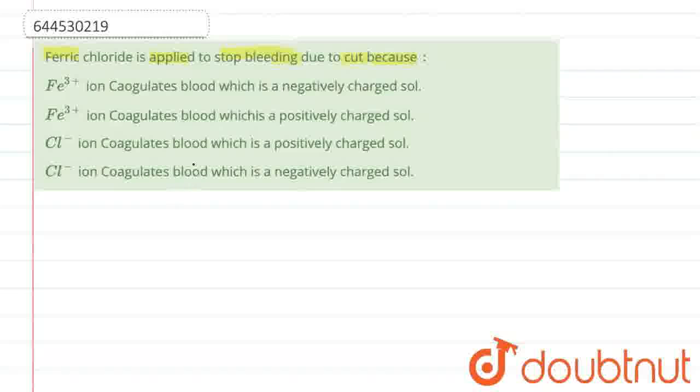So if we talk about ferric chloride, we all know that it is FeCl3. So it is FeCl3, that is ferric chloride.